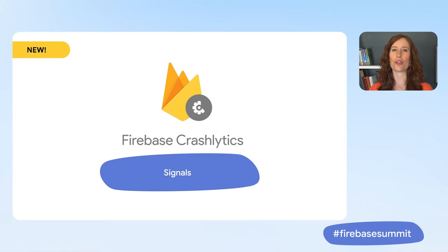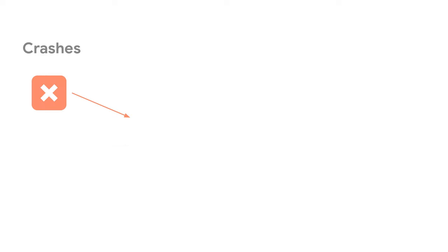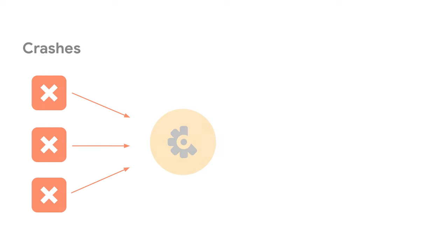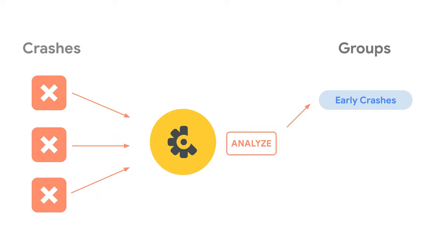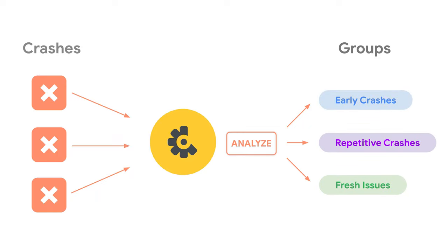Signals analyze your crashes to uncover interesting commonalities and characteristics. Today we're launching with three signals: early crashes, repetitive crashes, and fresh issues.